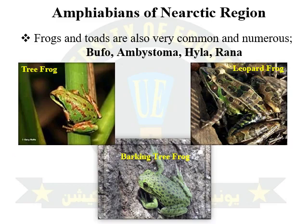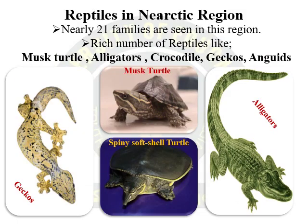Frogs and toads are also very common among the amphibians. These include Bufo frogs, Ambystoma, Hyla, and Rana species. Reptiles of the Nearctic region are represented by 21 families, so a great variety of reptiles is present here. These include musk turtle, alligators, crocodiles, geckos, and anguids.